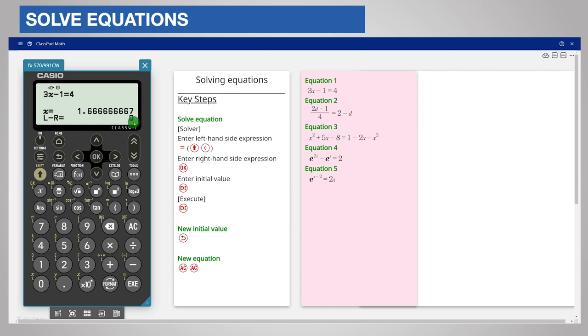If you want the value as a fraction, store the solution in memory by pressing variable and then choosing a memory store such as A. Confirm with store. You can display the fraction from memory in the Calculate app.